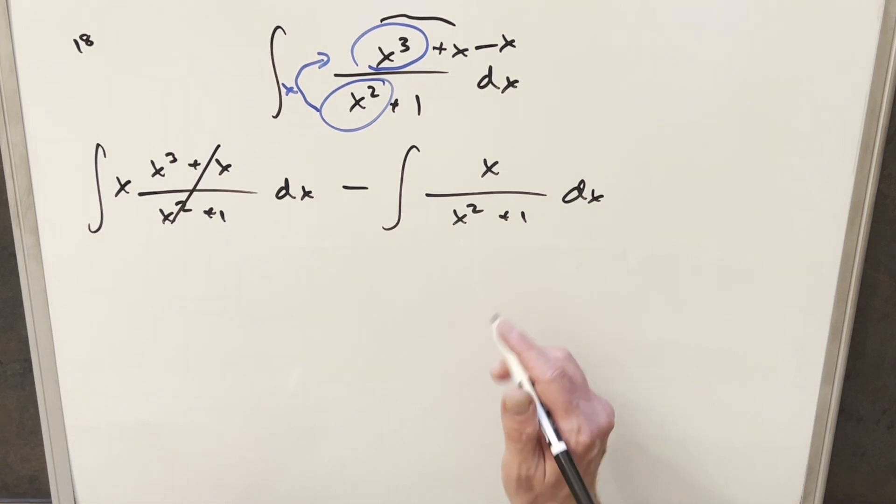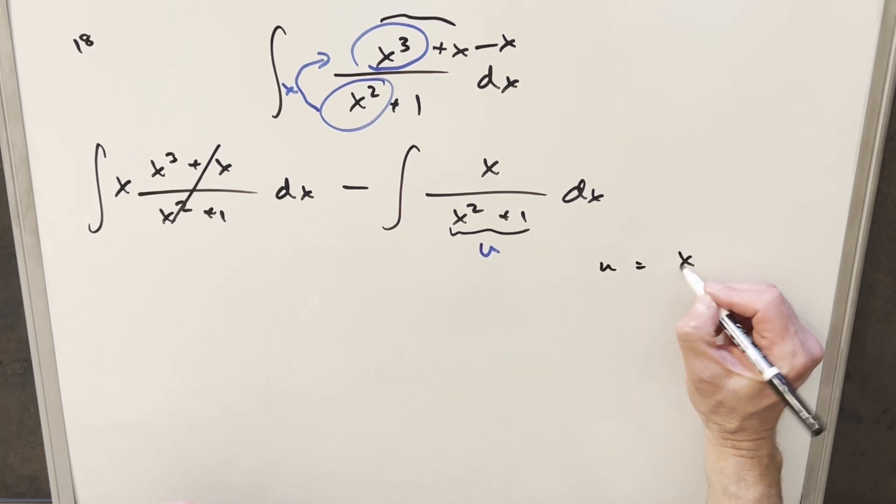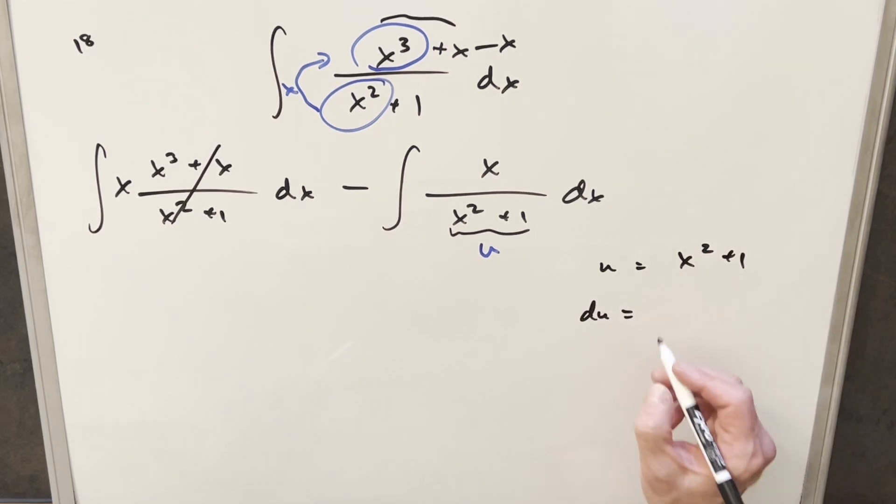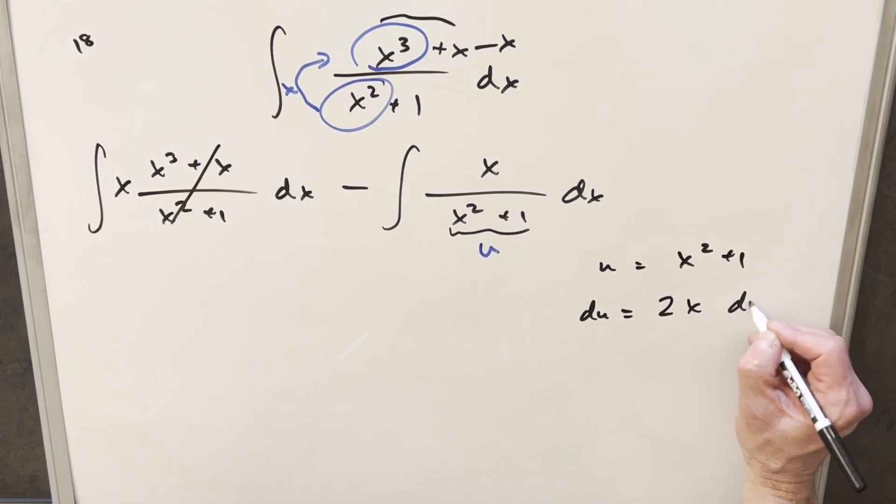What I want to do here is a u substitution, just making, let's make the whole denominator the u. So when I do that, let's come over here. So we'll say u is going to be x squared plus 1. I'll take a derivative, so our du value is just going to become 2x dx.